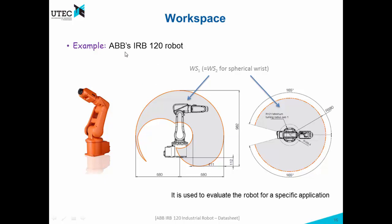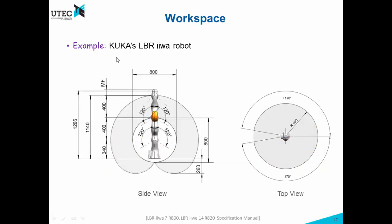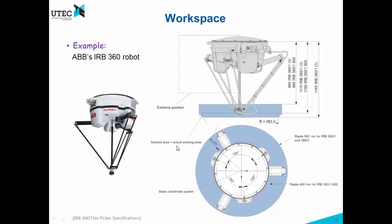Here is the first example we saw of ABB's IRB robot, showing the primary workspace. This robot has a spherical wrist, which means it can have all possible orientations — so it doesn't matter where the position of the end effector is; due to the spherical wrist it will have all possible orientations, and both workspaces are the same. This is an example for KUKA's LRB robot, and this is another example for a parallel robot — a Delta robot — where the workspace is the one shown in blue.